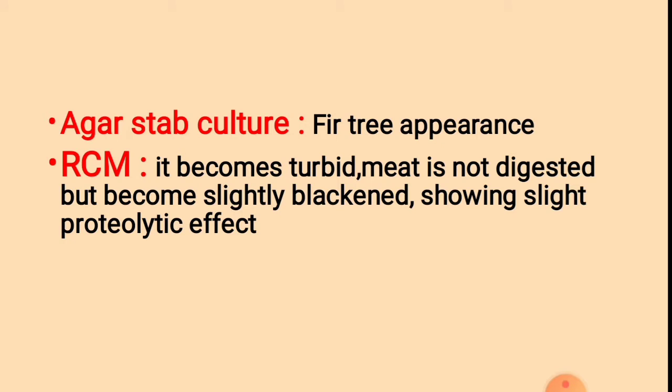Fir tree appearance means a Christmas tree-like appearance. On Robertson cooked meat medium, it becomes turbid; meat is not digested but becomes slightly blackened, showing a slight proteolytic effect. On RCM, they form turbid and slightly blackened type colonies.